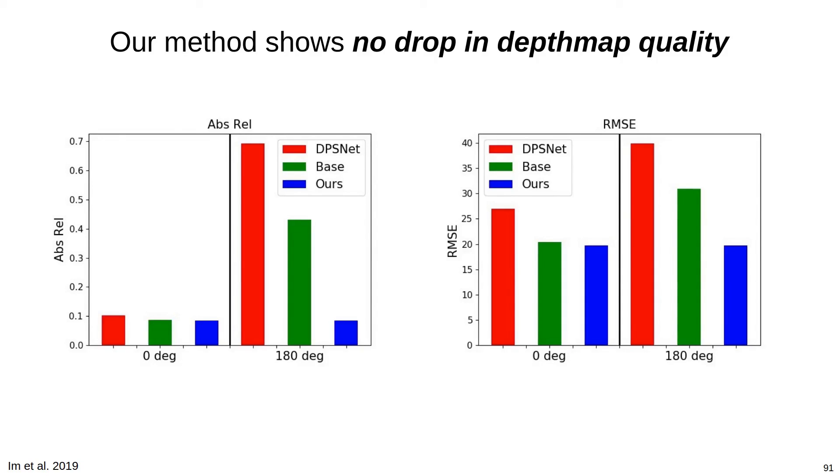Quantitatively, we show no change in absolute relative depth error or RMSE depth errors across the test set of the GTA SFM dataset when rotating images. We perform better than DPSNet under both scenarios, as well as a base network, shown in green, that is identical to our network but with a standard feature extractor that lacks viewpoint compensation.